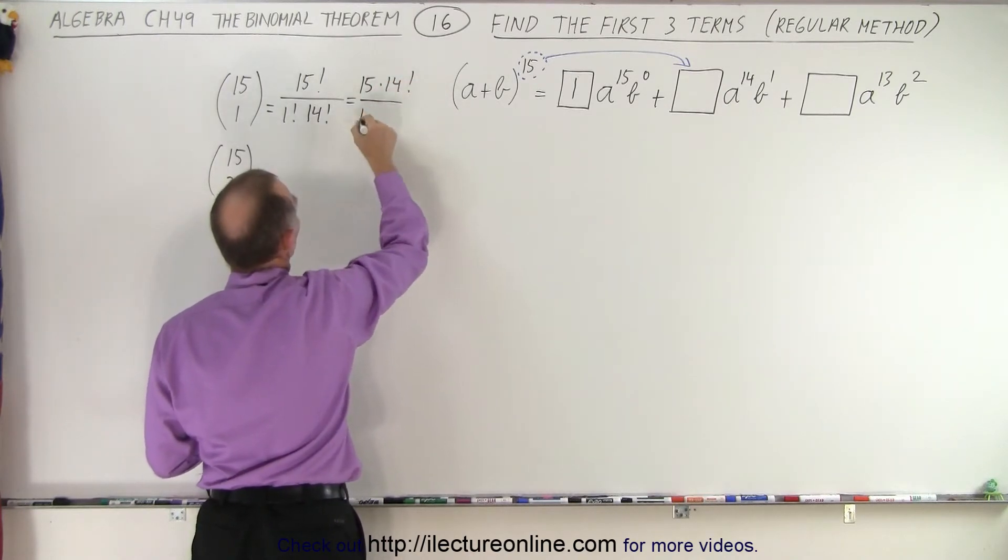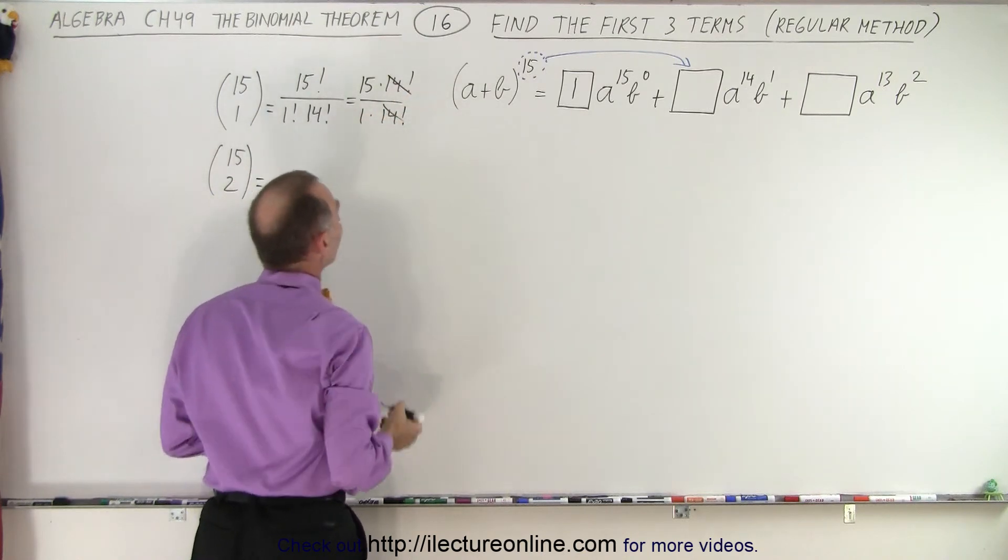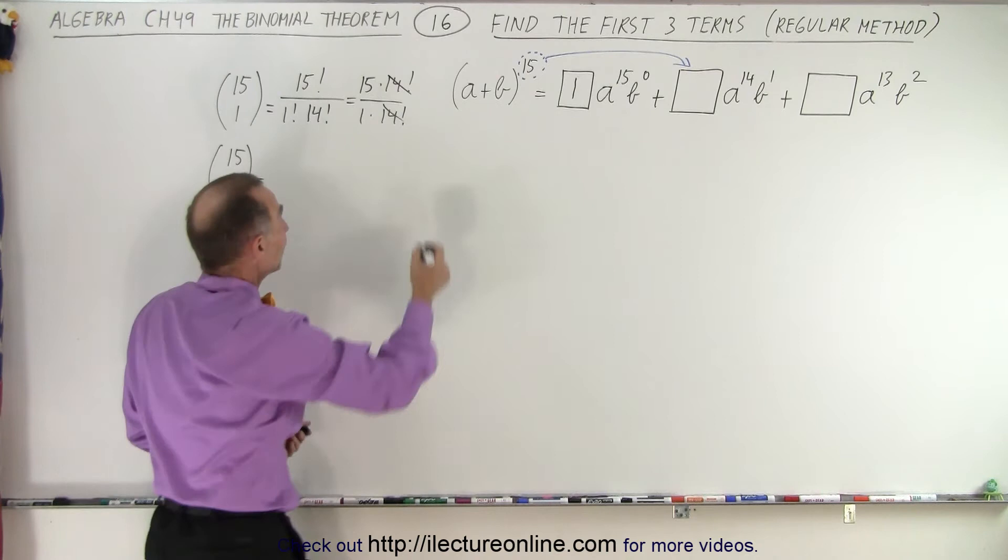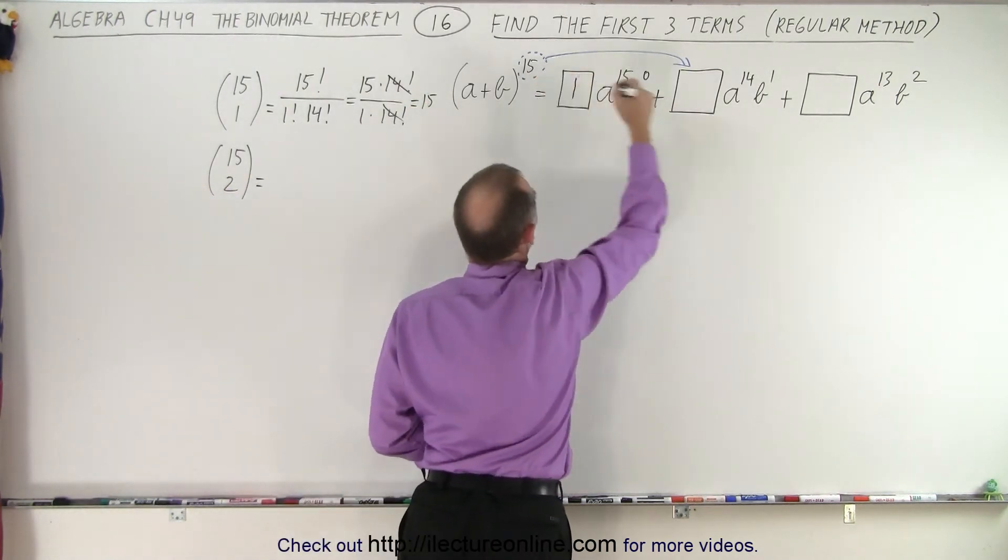The 14 factorial cancels out and you're left with the number 15. So that means that is indeed the number 15, which is what we suspected. And then if you don't remember the trick, then you go ahead and solve this particular equation.